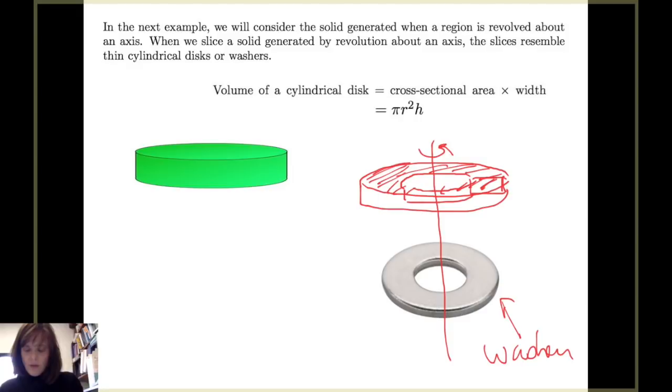The top surface of the washer is a circle that has what we call an outer radius, formed when this outer edge of the rectangle sweeps around the axis of revolution. To find that cross-sectional area, I'm going to take π times the outer radius squared, but then I must subtract this area of the inner circle, and that inner circle has a radius which we'll call r_i for the inner radius.